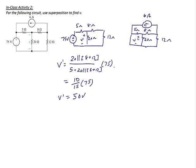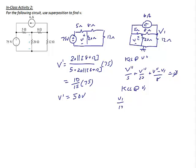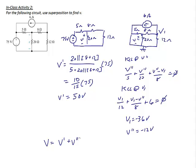For the circuit on the right with the 6 amp source on, I can't use the voltage divider, so I'll use the node voltage method. I'll label ground at the bottom, the left node V double prime, and the right node V1. KCL at V double prime: V double prime over 5 plus V double prime over 20 plus (V double prime minus V1) over 8 equals 0. KCL at V1: V1 over 12 plus (V1 minus V double prime) over 8 plus 6 equals 0. Solving: V1 equals negative 36 volts and V double prime equals negative 12 volts. So V equals V prime plus V double prime, which is 50 minus 12, giving V equals 38 volts.